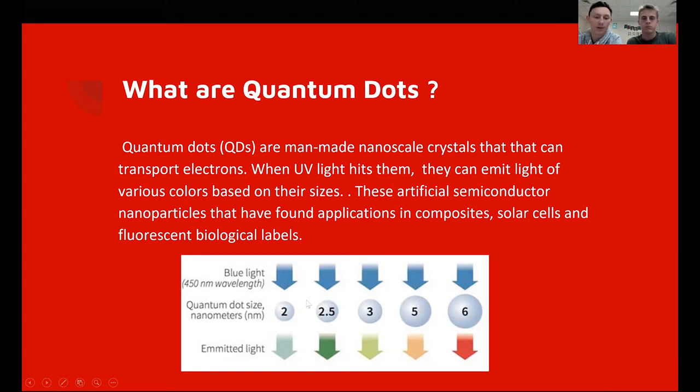As you can see down at the bottom, whenever a blue light would hit a size two quantum dot, it'll be a bluish color and two and a half be green, and as it gets bigger, the colors will start to change to an orange and then a red. These artificial semiconductor nanoparticles have found applications in composites, solar cells, and fluorescent biological labels.